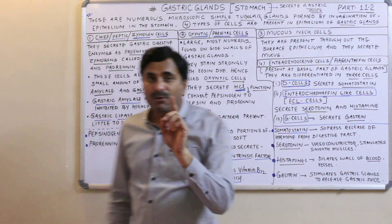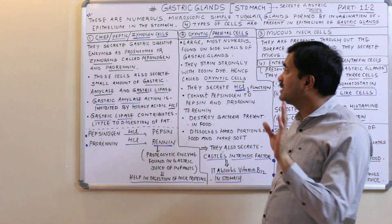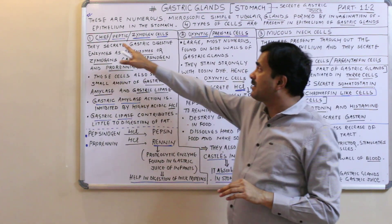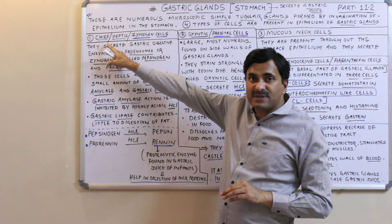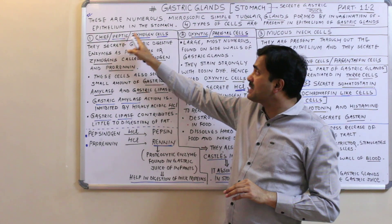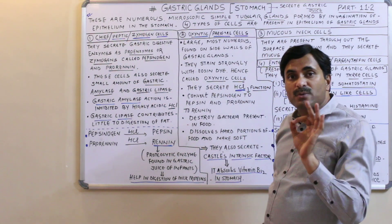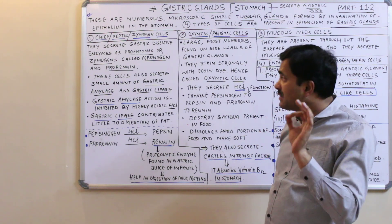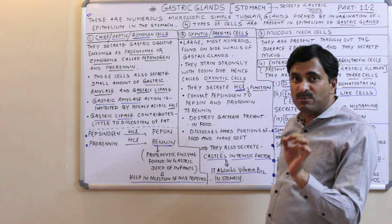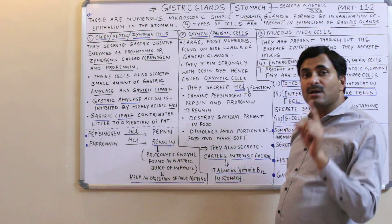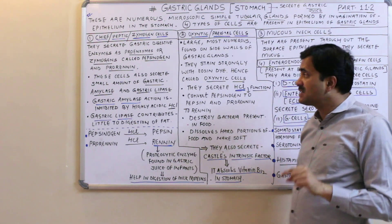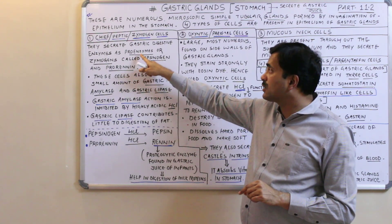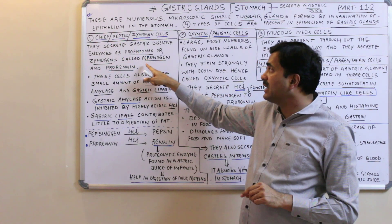The first type of cell present in the epithelium of the gastric gland is the chief cells, also called peptic cells or zymogen cells. These cells secrete pro-enzymes or zymogens — specifically pepsinogen and pro-renin. Two types of zymogens or pro-enzymes are secreted by the chief cells: pepsinogen and pro-renin.